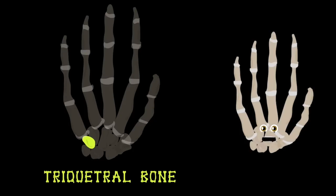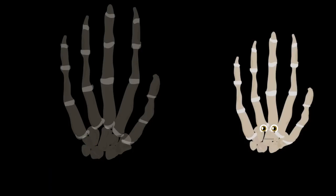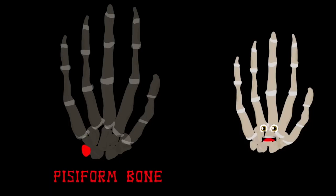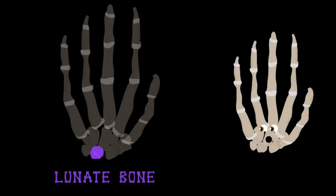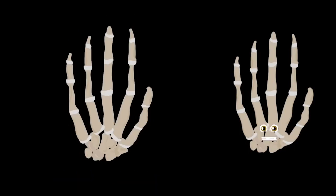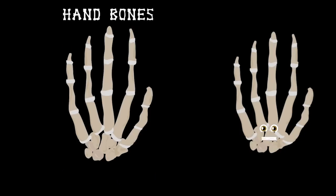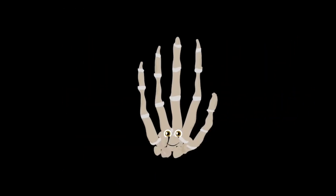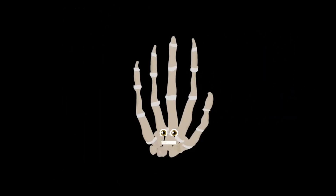On the outside of the wrist is where the triquetral bone made its home. The pisiform bone is the next on the list, then the lunate bone at the end of your wrist.